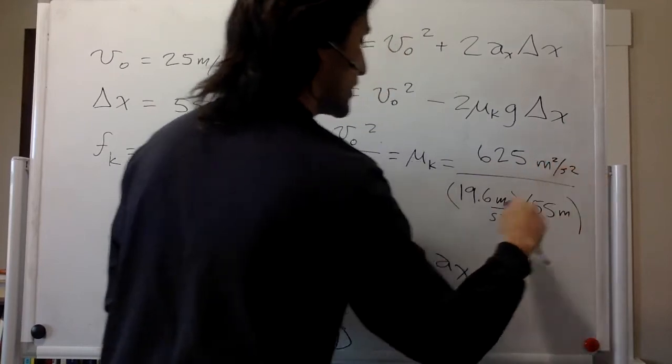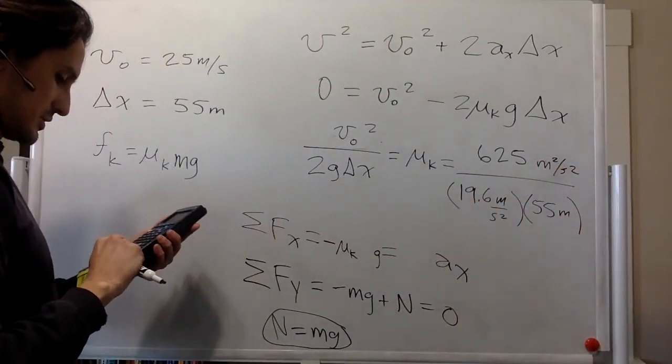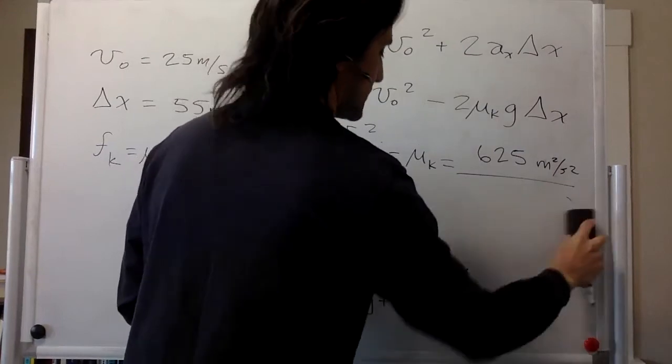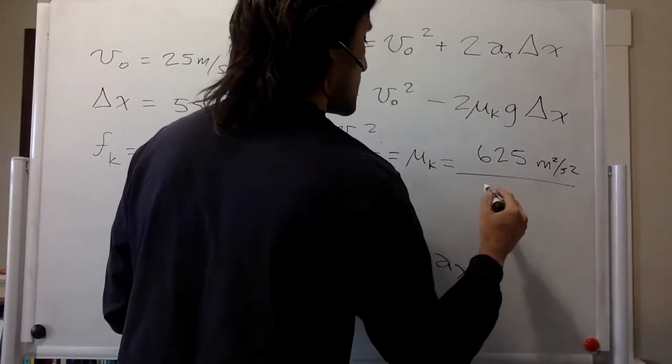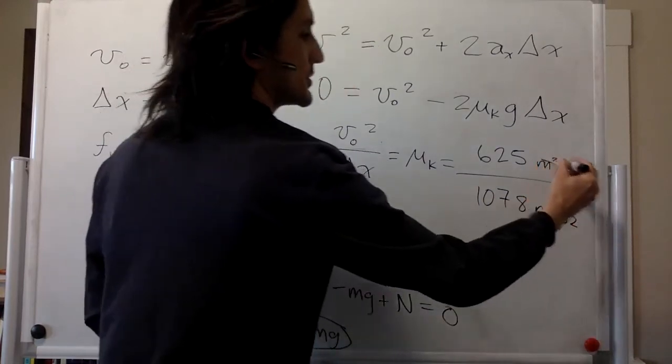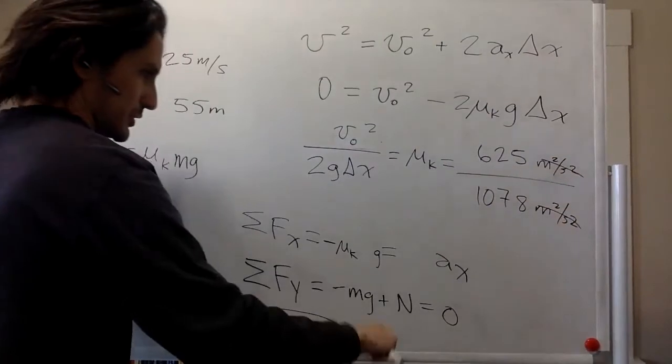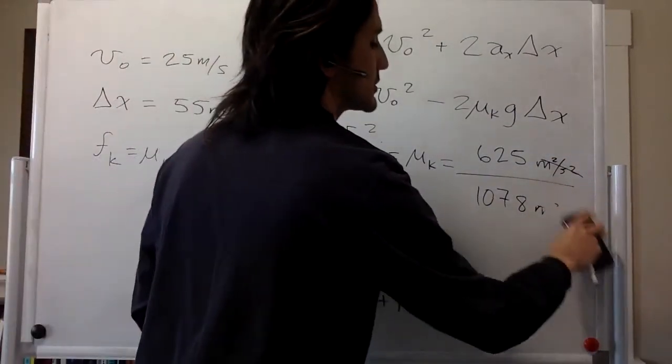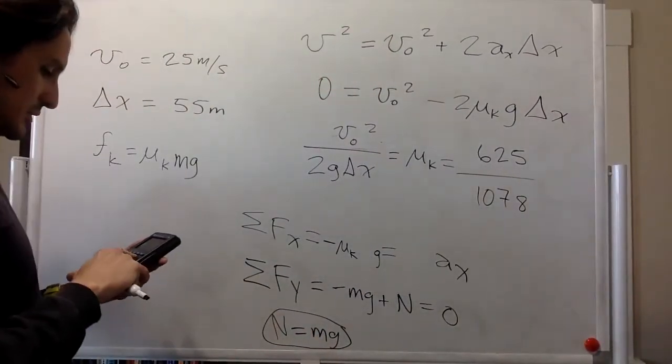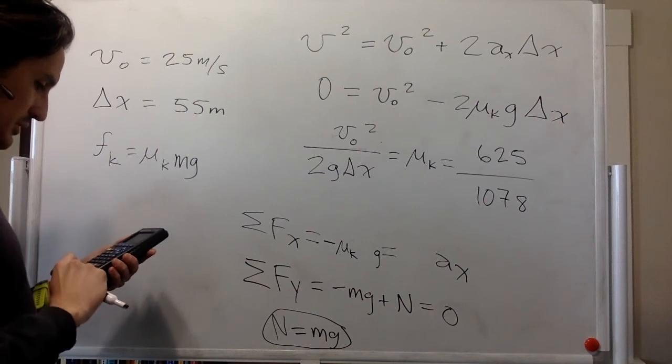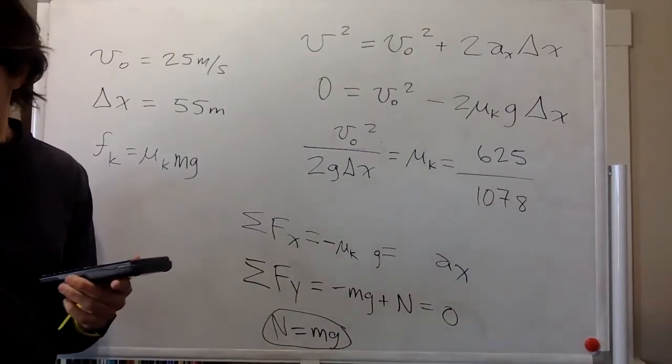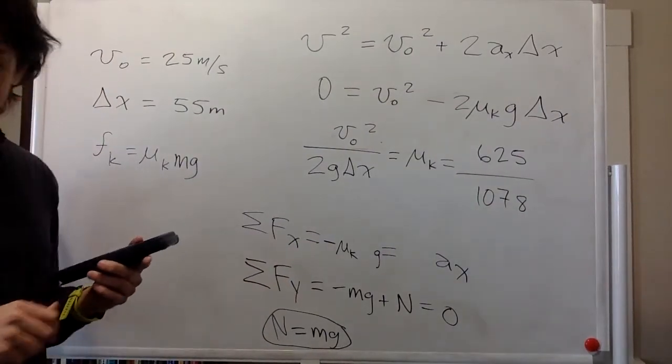And so 25 squared is 625. Meter squared, second squared. This one is 1078 meter squared, second squared. So these cancel out as they should because mu k is unitless. It's just a coefficient. And so 625 divided by 1078 is 0.579.